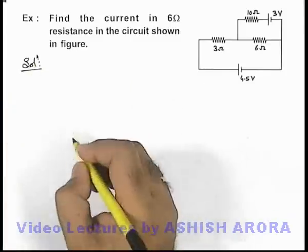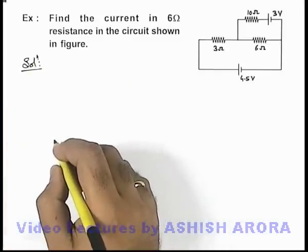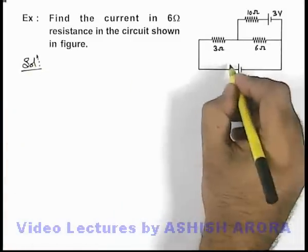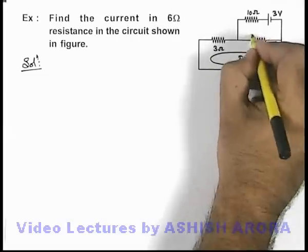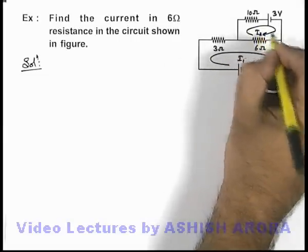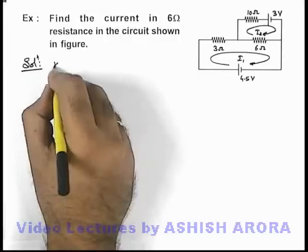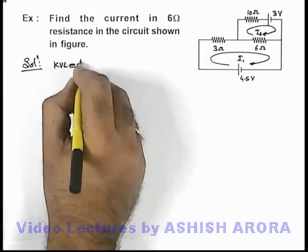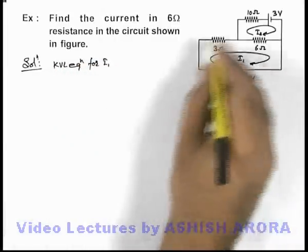Now let us first solve it with the method of Kirchhoff's voltage law, for which in the 2 loops we supply 2 currents, i1 and i2 here. Now let us write directly the KVL equation for the current i1 in this loop.